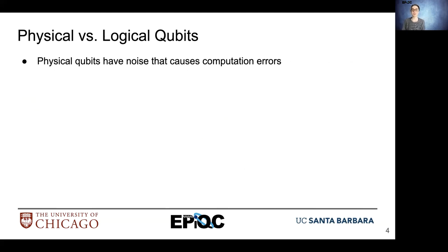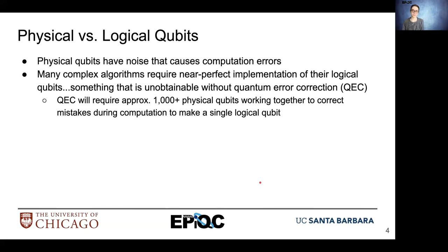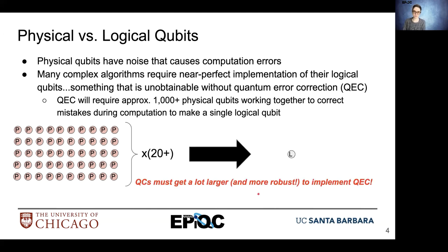Physical qubits today have a lot of noise that causes computation errors. Many complex algorithms need near-perfect qubits, and that's not obtainable with current hardware without error correction. With quantum error correction we'll need approximately 1000 or more qubits working together to correct mistakes during computation, and all those 1000-plus physical qubits will make just one logical qubit. To give perspective, with 50 physical qubits you'd need to multiply that by 20-plus to create a single logical qubit. So quantum computers must get much larger and more robust to implement quantum error correction, and we might not see these types of devices for the next 10 or more years.